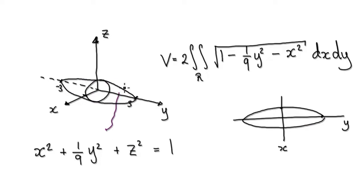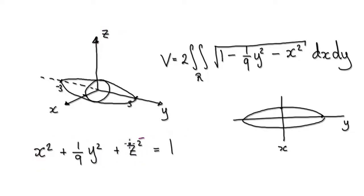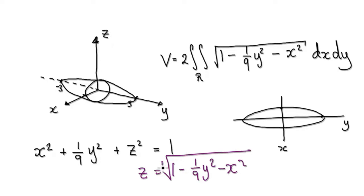Asking you to work out the volume of this ellipsoid is the same as asking you to work out the double integral of the surface, which in our case would be z. So you would make z the subject: that rearranges to 1 minus (1/9)y squared minus x squared. When you square root you get two versions, but let's just look at the positive version, and then later on we can multiply it by 2.